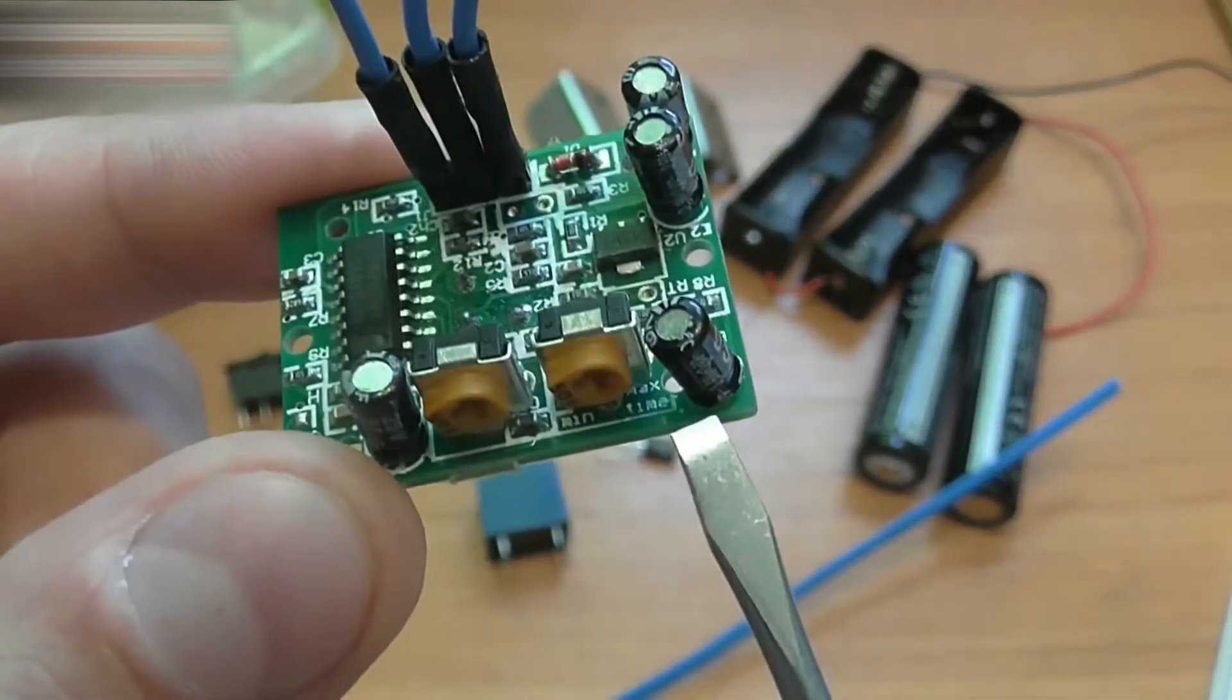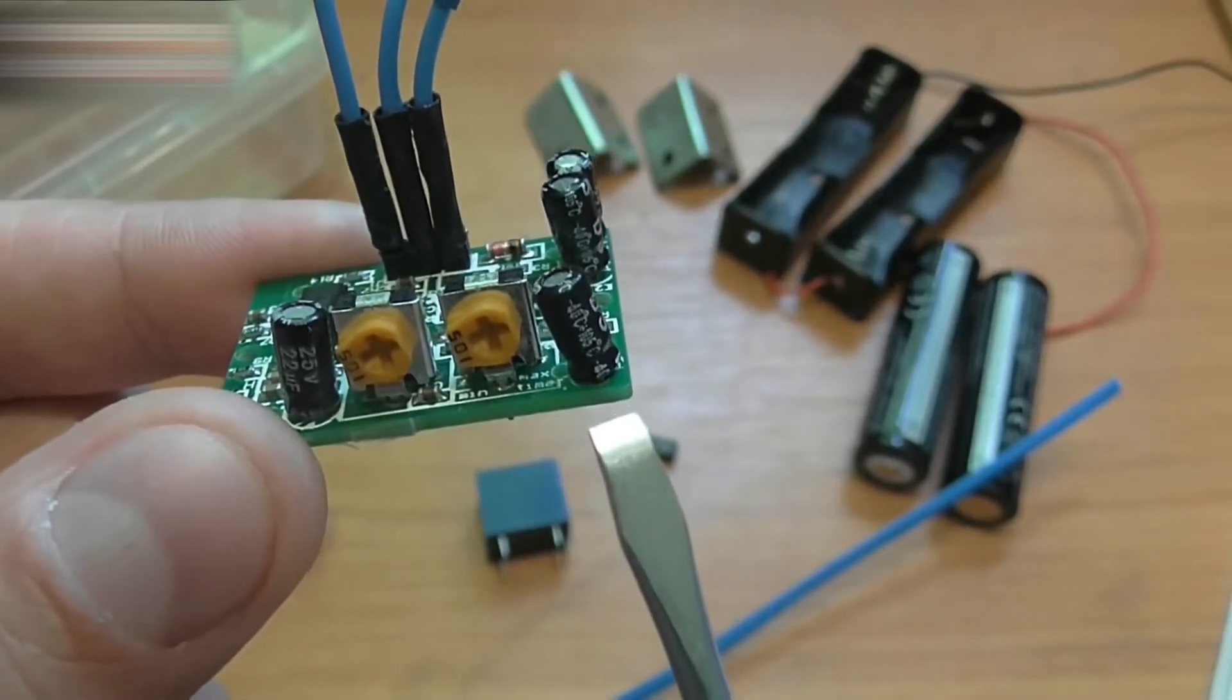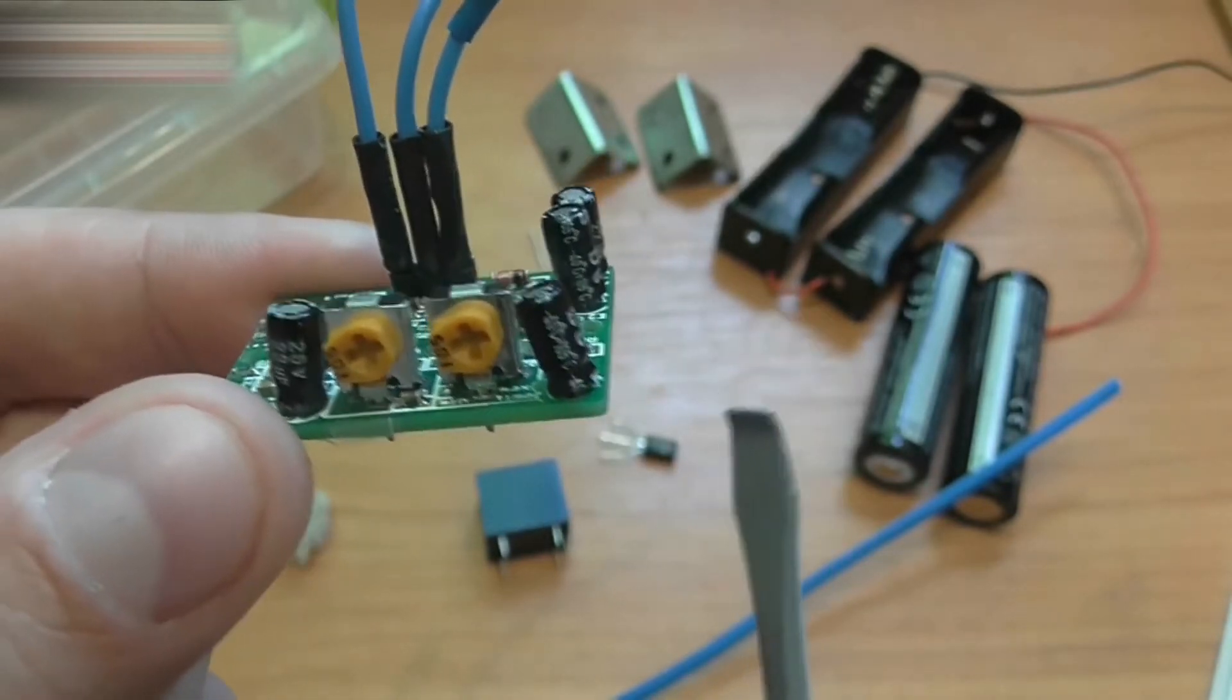The second trim pot controls time. It has time, min and max signs here. You can set the timer for a period of 5 to 200 seconds.